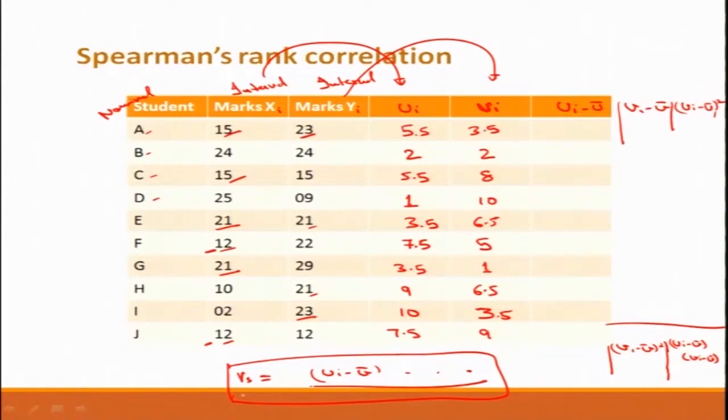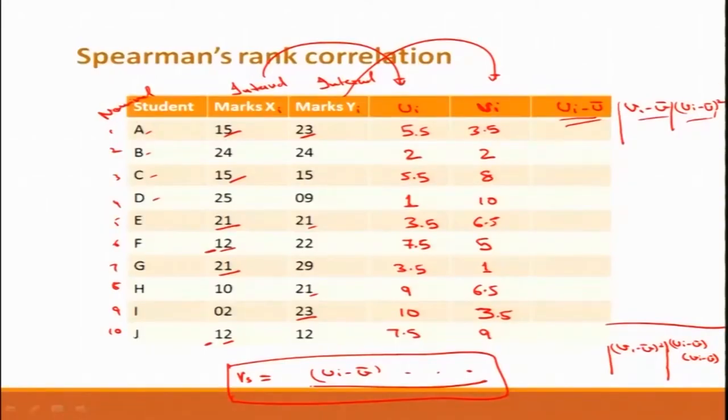This was only 10 entries, created as hypothetical data to illustrate the ranking process. What if we have 100 or 1000 or more entries? We cannot do it manually very easily. So I will take this data into Microsoft Excel and try to do all these calculations using the software.